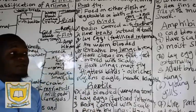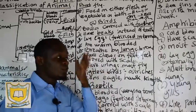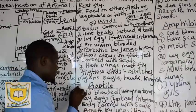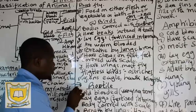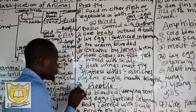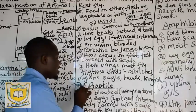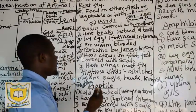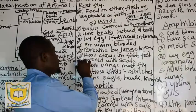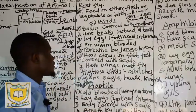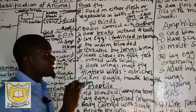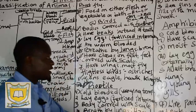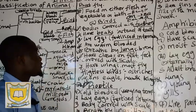Characteristic number six: birds have claws on their feet. When you look at any bird, such as a chicken, you get claws at the end of every toe. These claws are used for protection, movement, and searching for food — for example, chickens use claws to search for food. Also, the feet of birds are covered with scales.